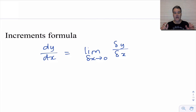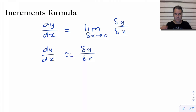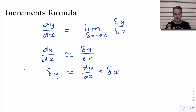So when delta x is really small, dy/dx is approximately equal to delta y over delta x — a small change in y over a small change in x when delta x is getting really, really small. So therefore, with a bit of rearranging, a change in y is approximately dy/dx, the derivative, times delta x, that small change in x.